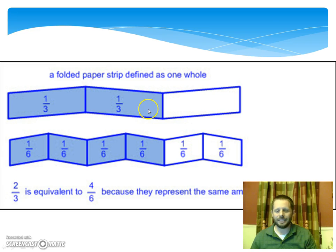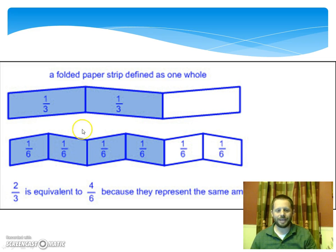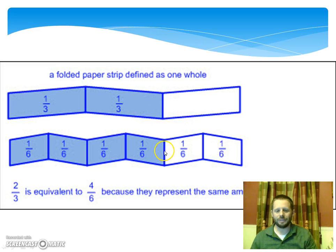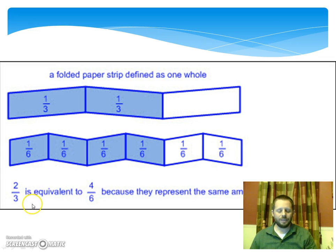Now to find out how many sixths it takes to equal that same amount, I have to notice that it takes two of these sixths to make one single third. So if I'm trying to make two-thirds, it's going to take one, two, three, four — four-sixths — to equal two-thirds. So the fractions four-sixths and two-thirds are equal in value, so they're what we call equivalent fractions.